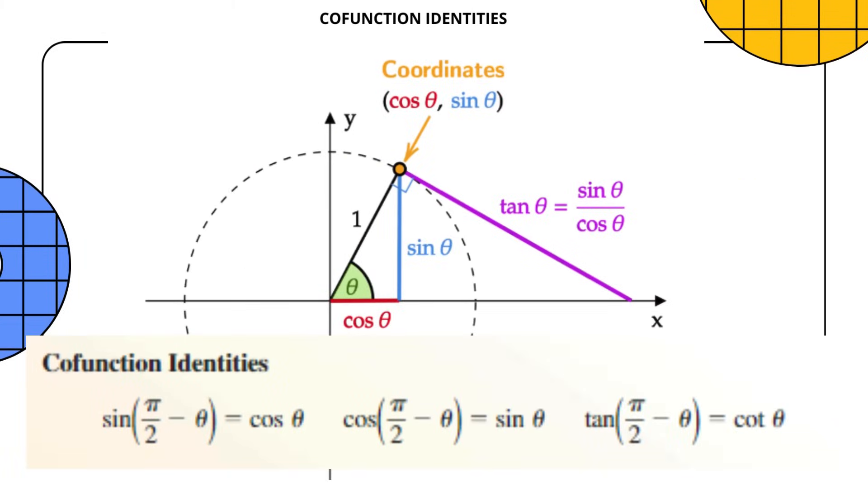Cofunction identities. Sine and cosine functions are complementary to each other, meaning the angles add up to 90 degrees. You can remember them by rhyming words like sine-cosine, tan-cotan, and secant-cosecant. Hence sin(π/2 - θ) = cos θ, and cos(π/2 - θ) = sin θ.